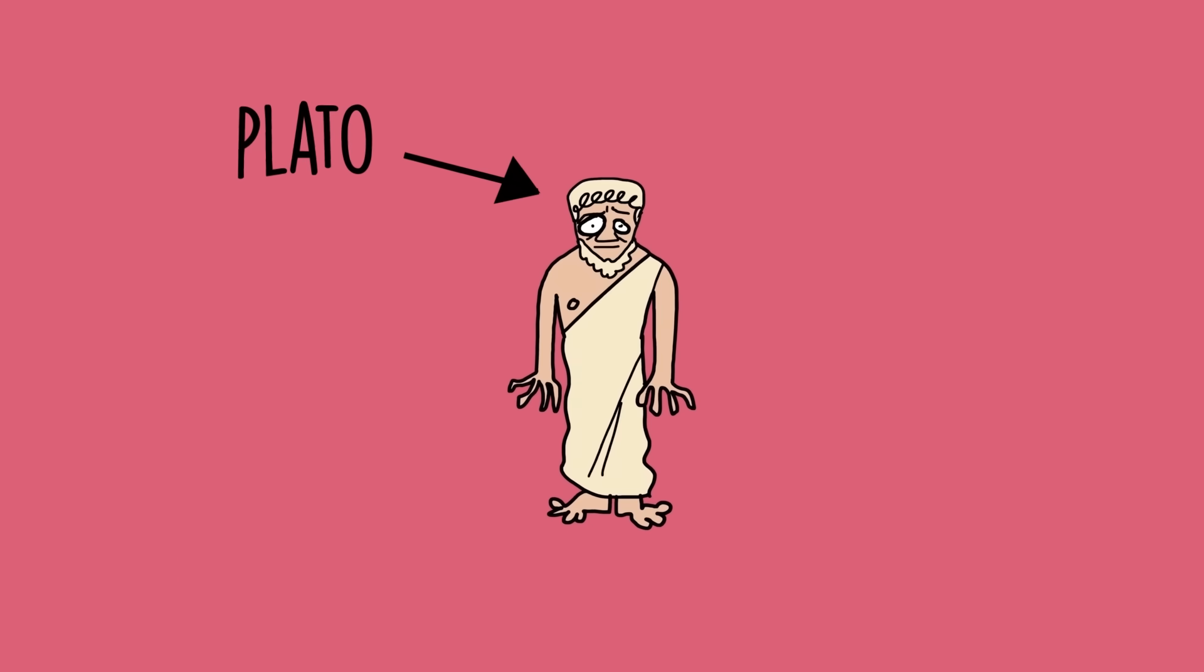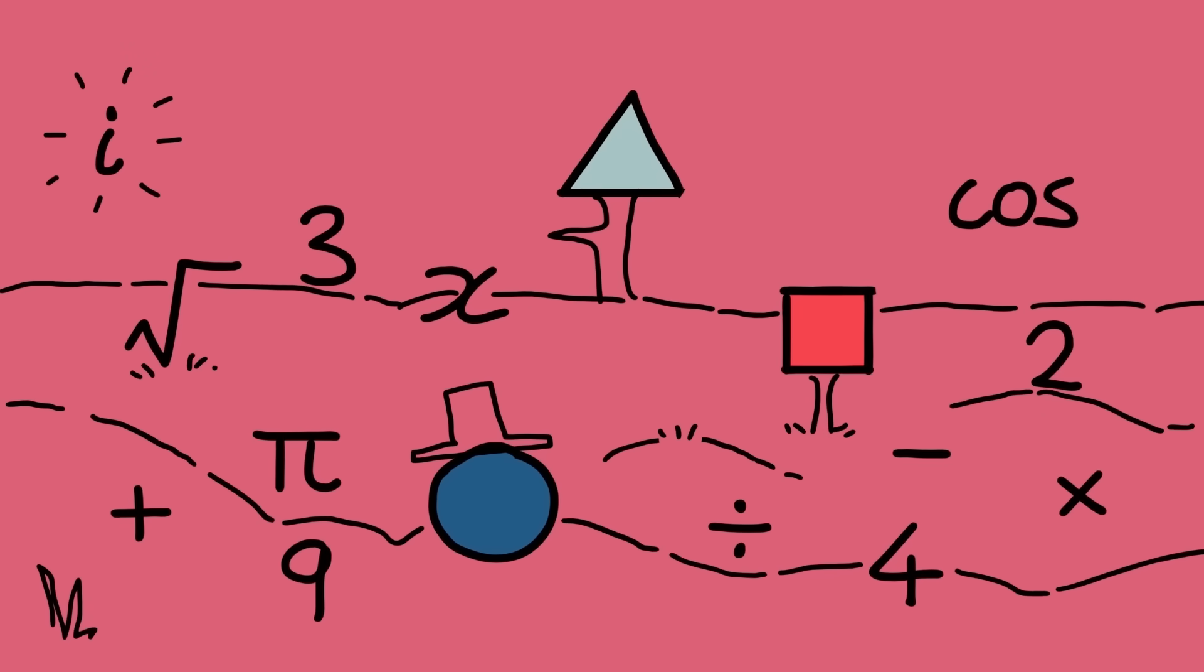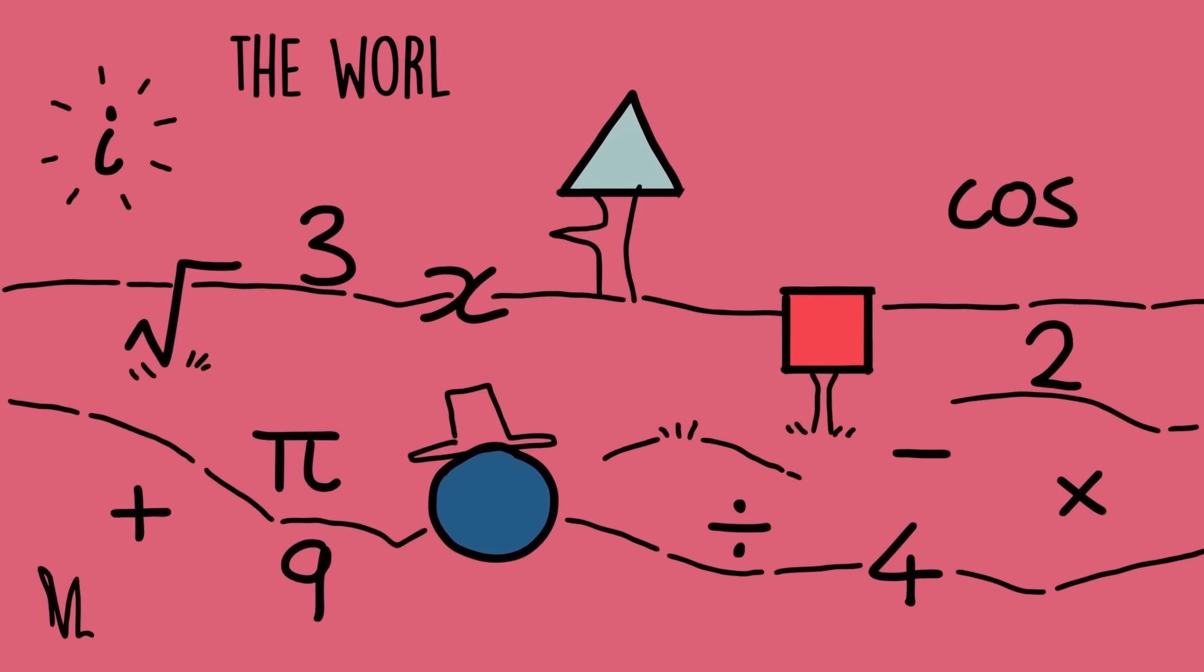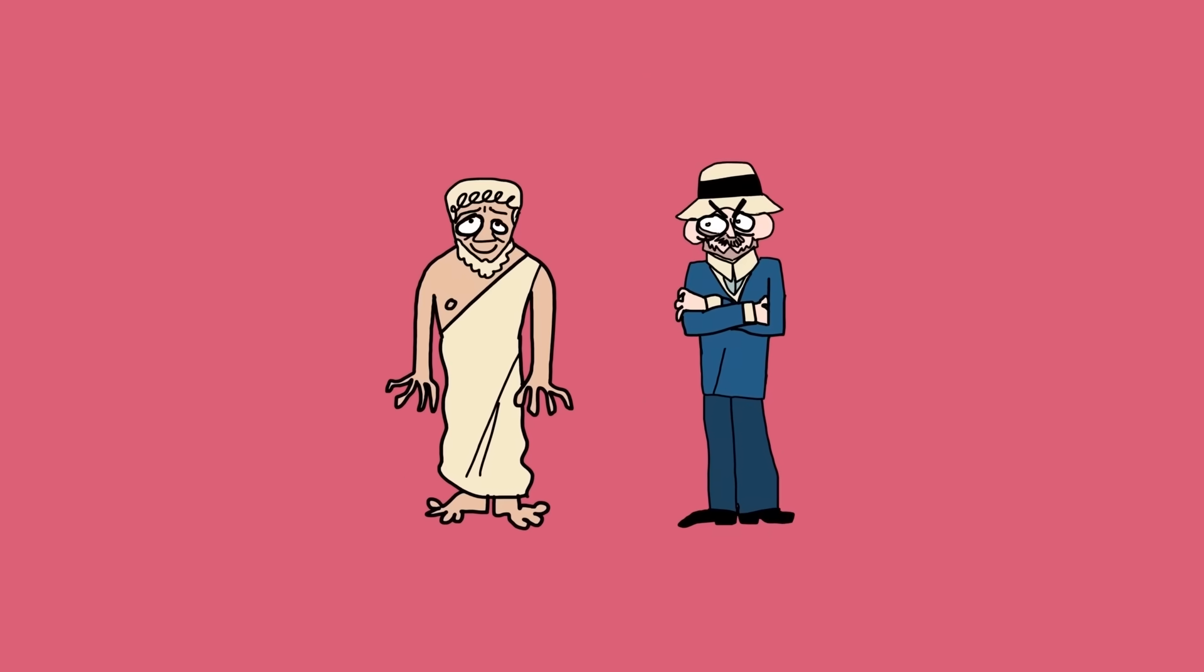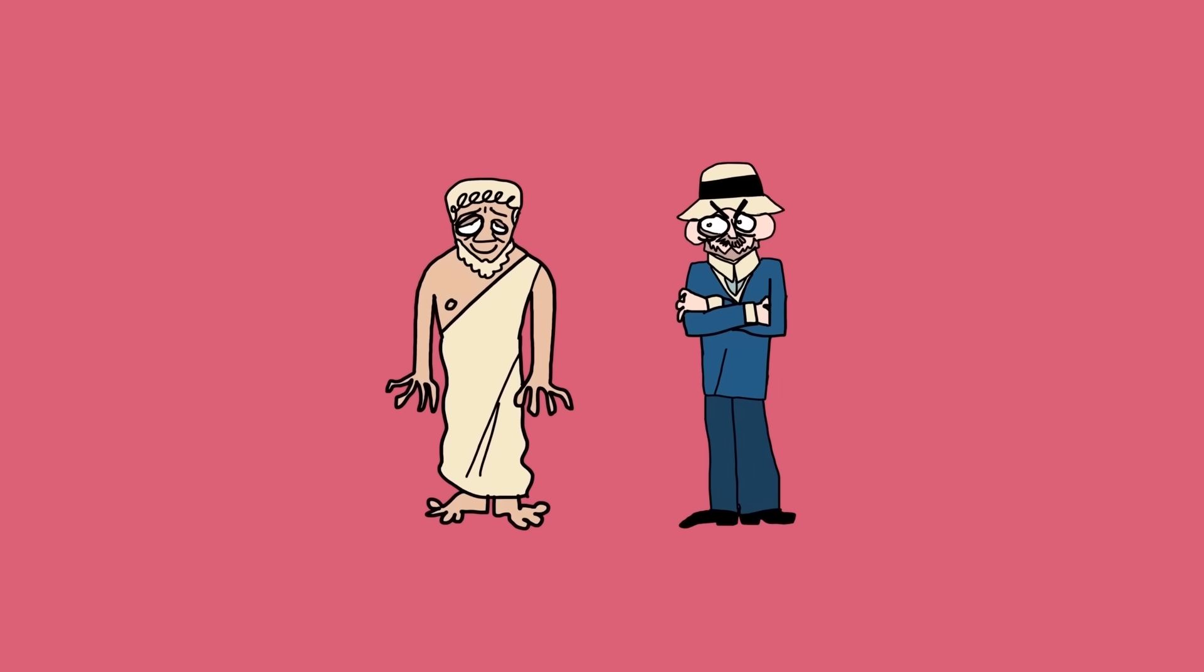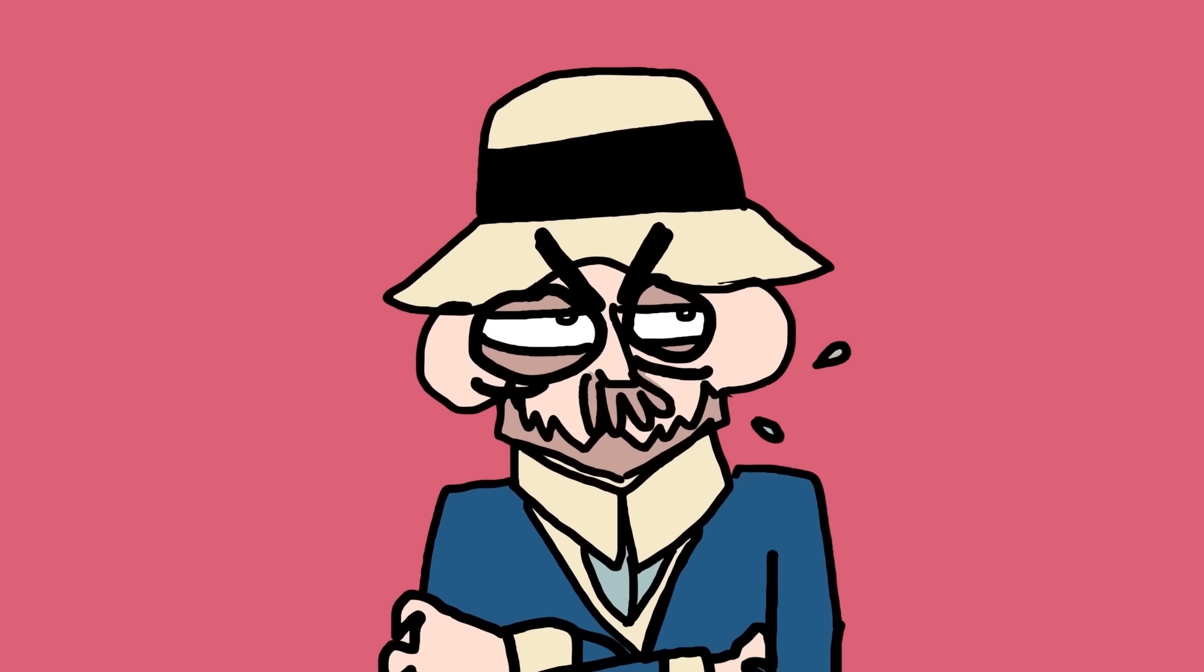The ancient Greek philosopher Plato thought that mathematical objects, shapes, numbers and the relationships between them belong to their own ideal world separate from ours. He called it the world of forms. But Hilbert wasn't a fan. He was a modern day man and the Platonist view was too mystical and airy-fairy for his liking. An idealized world of forms? Please.